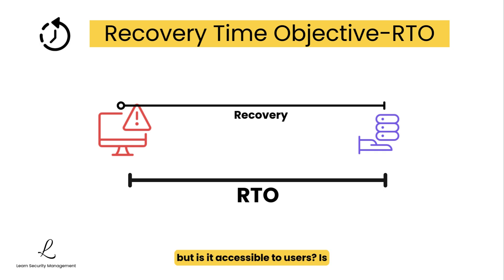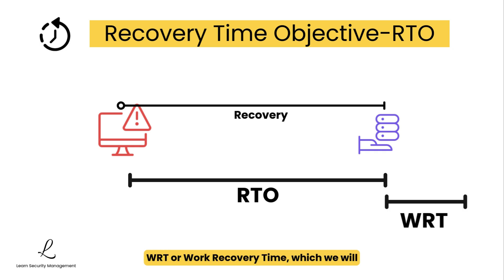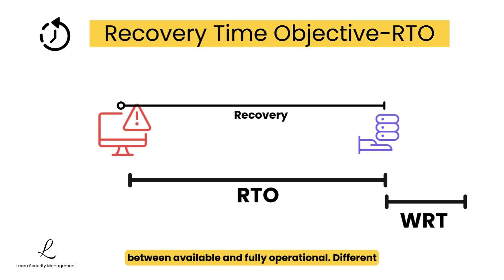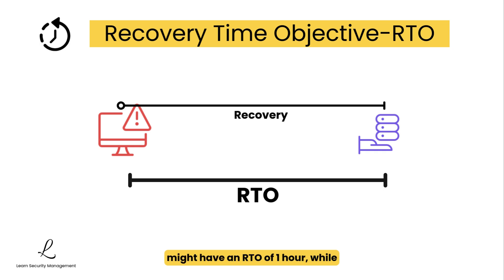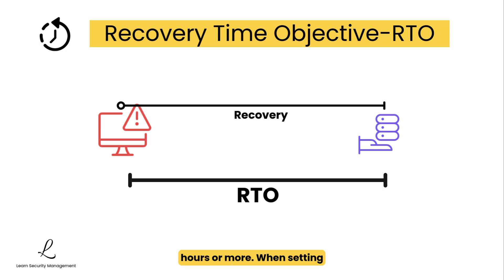Your database might be online, but is it accessible to users? Is all functionality restored? This is where WRT, or Work Recovery Time, which we will cover next, becomes essential. It bridges the gap between available and fully operational. Different systems will have different RTOs based on their criticality. Your authentication servers might have an RTO of 1 hour, while the company blog might have an RTO of 24 hours or more.